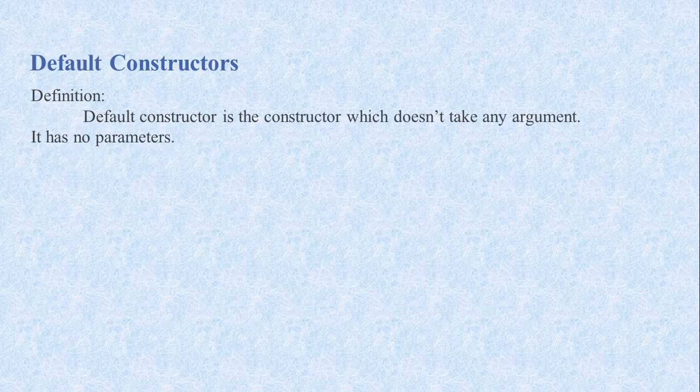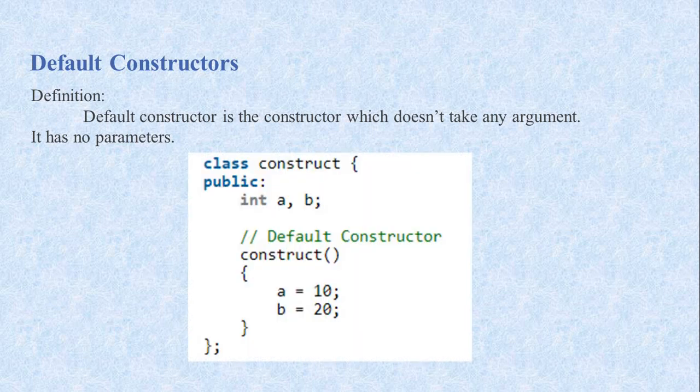There are two types of constructors. The first is the default constructor, and the second is the parameterized constructor. A default constructor is a constructor which does not take any argument — it has no parameter. Basically, the default constructor would have no parameter.